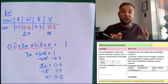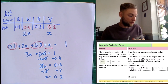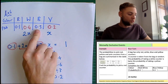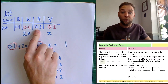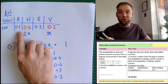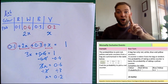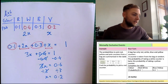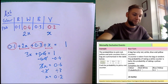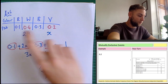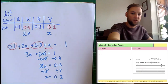How can I check? By adding all these up: 0.2 plus 0.3 is 0.5, plus 0.4 is 0.9, plus 0.1 is 1 — which is exactly what we want. We've completed the table: white is 0.4, yellow is 0.2.